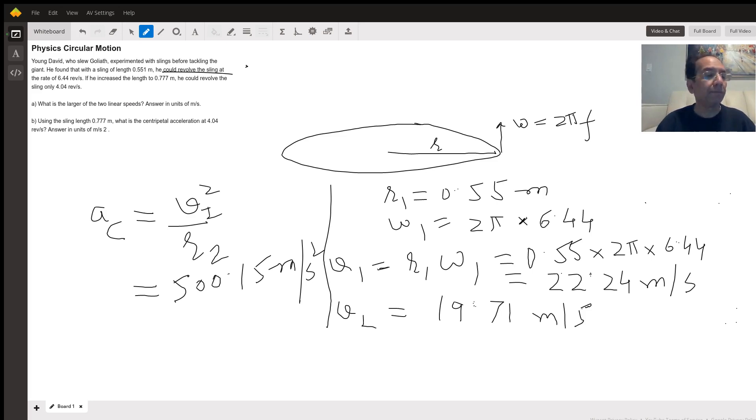We use the formula v equals r times omega, where omega is the angular velocity. Angular velocity is related to linear velocity as v equals r omega.